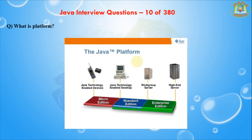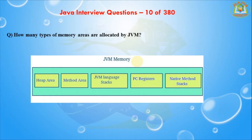Next I am going to discuss about how many types of memory areas are allocated by the JVM. There are different memory areas in the JVM: heap area, method area, JVM language stacks, PC registers, and native method stacks. Class loader is a subsystem of JVM used to load class files. Method area stores per-class structures such as the runtime constant pool, fields, method data, and the code for methods.